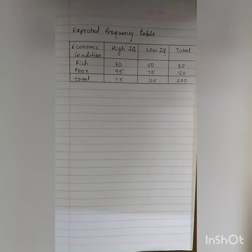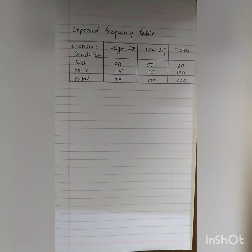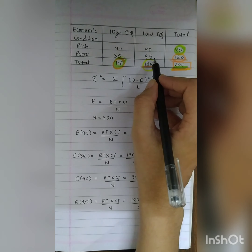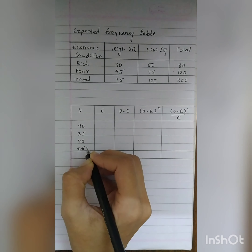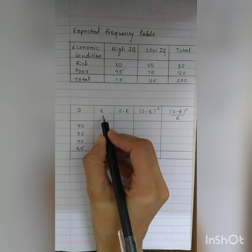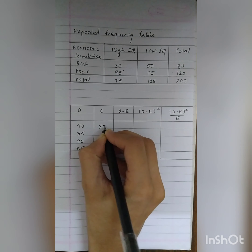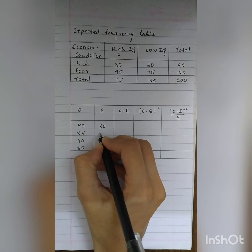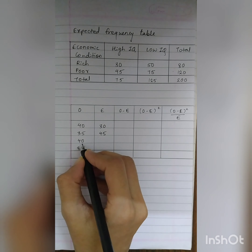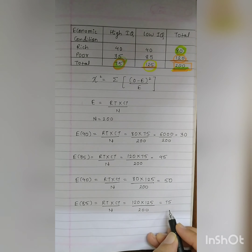Now calculate the chi-square value using a table. The observed values are 40, 35, 40, and 85. The respective expected values are: 30, 45, 50, and 75. The O minus E values are: 40 minus 30 equals 10; 35 minus 45 equals minus 10; 40 minus 50 equals minus 10; 85 minus 75 equals 10.